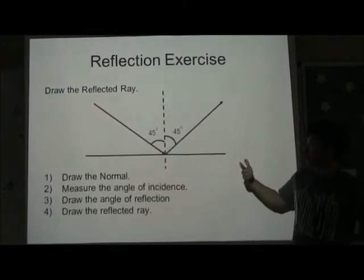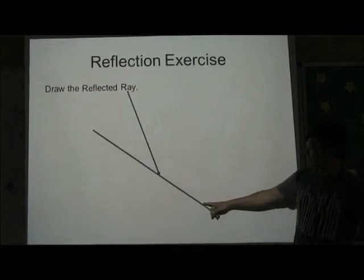Now let's try another example. The reflecting surface is now slanted.